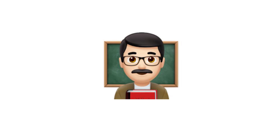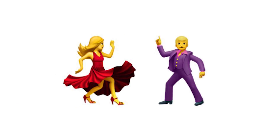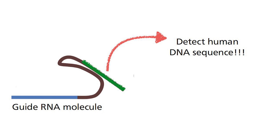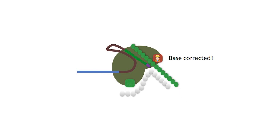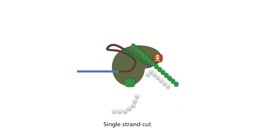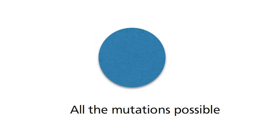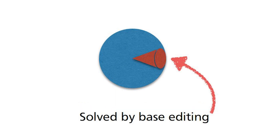I love base editing. The approach is very elegant: one can design the guide RNA to recognize the target sequence with the mutation, followed by the engineered CRISPR-Cas enzyme correcting the base, then initiate a single-strand break which is safer, and finally let the cell do its own correction. However, in the bigger scheme of genetic diseases, the mutations that can be corrected by this technique only represent a spectrum of the entire family.